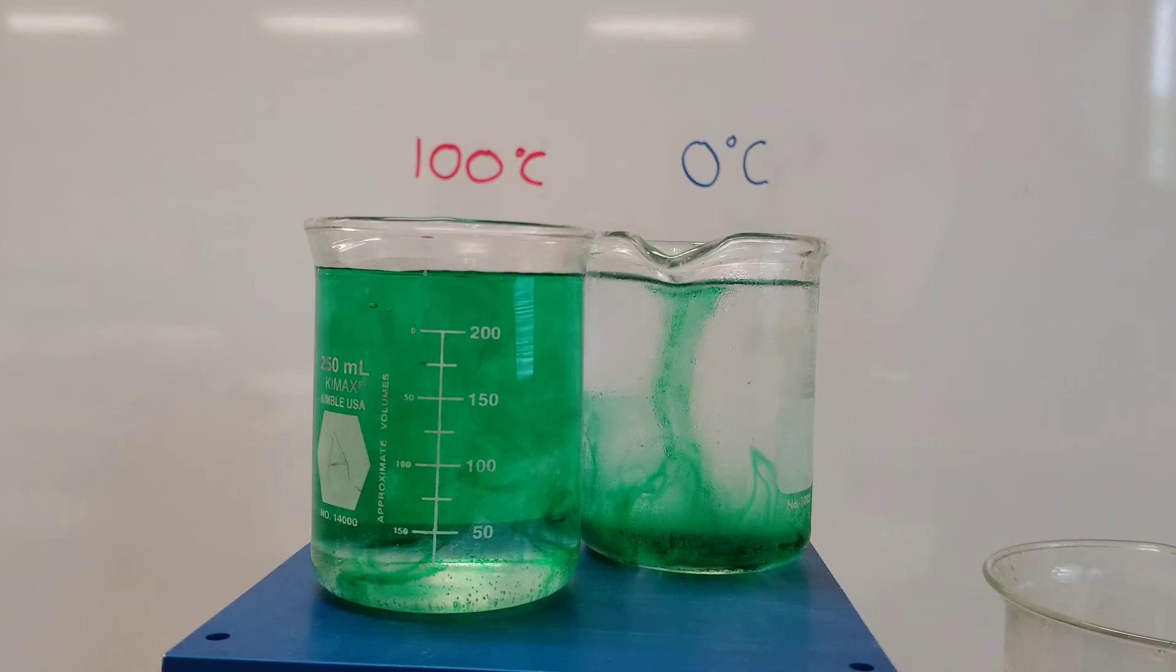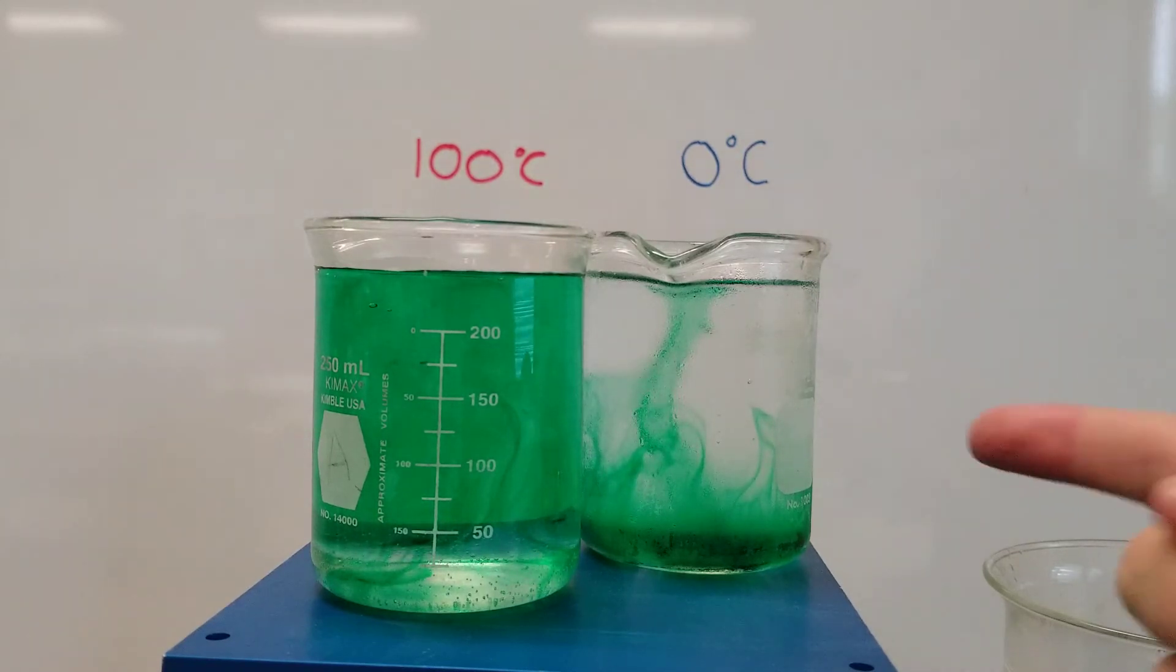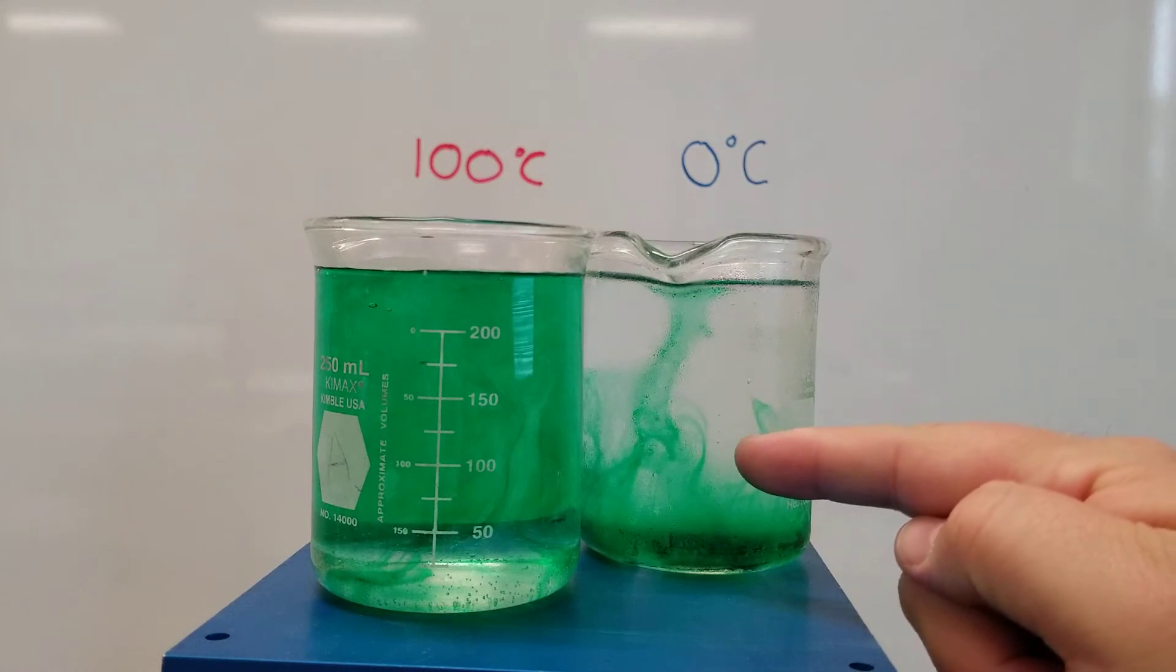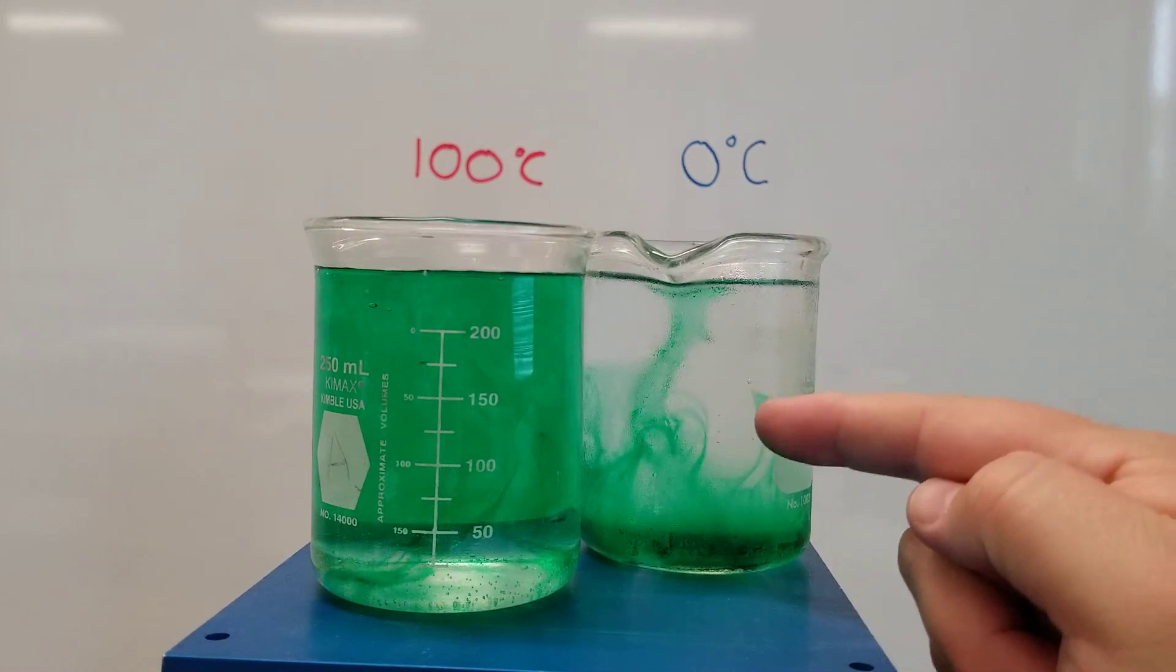And for the most part, with the exception of the very bottom of the beaker, the green food coloring has pretty much diffused throughout the entire beaker. Whereas over here, you can see that it's very, very slowly moving around inside the beaker.